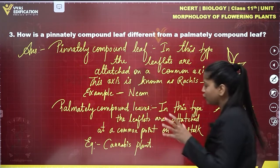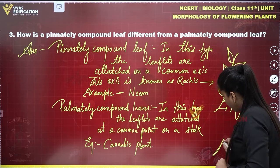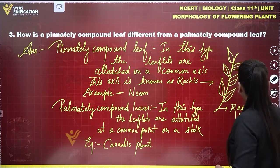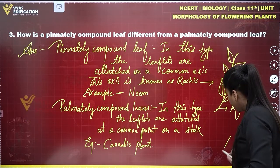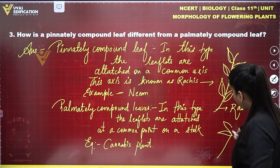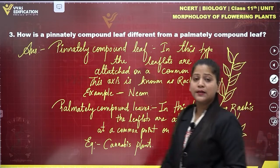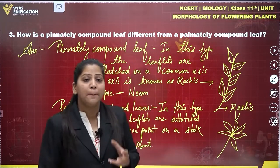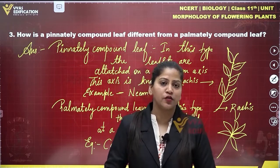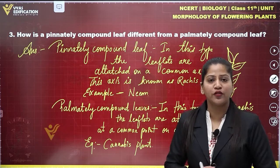If you want to draw the structure of palmately compound leaves, it would look like this: a common stalk is present, and on the common stalk there is a common point. On this point, the leaves are attached. This arrangement is said to be palmately compound leaves, where all the leaflets are attached at the common point present on the stalk. The example is the cannabis plant. This is the complete solution of question number 3.